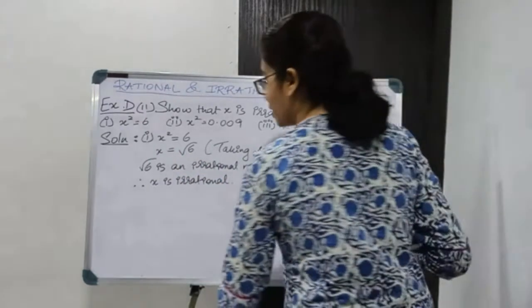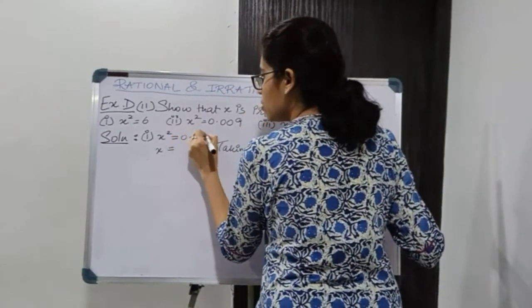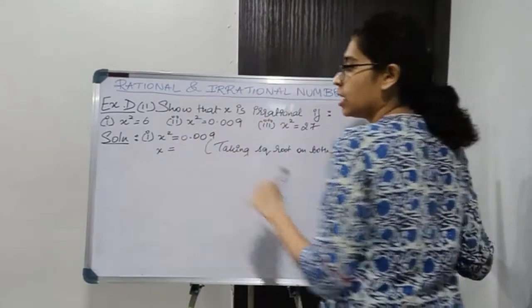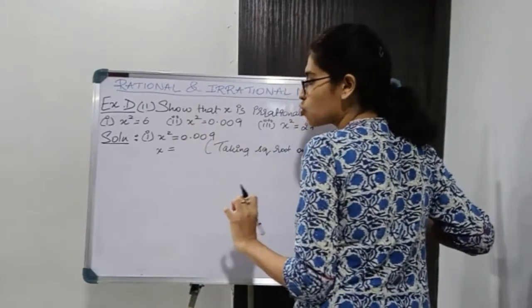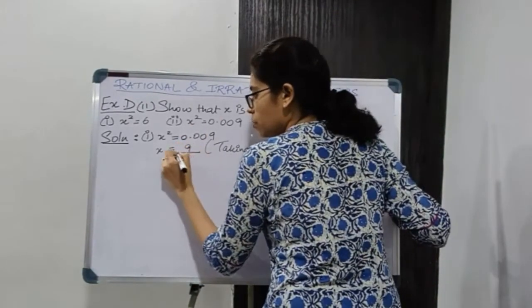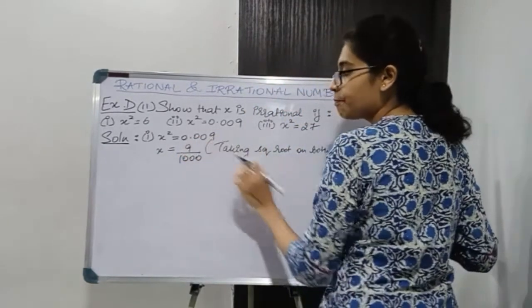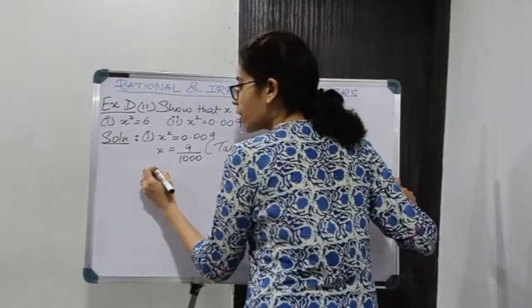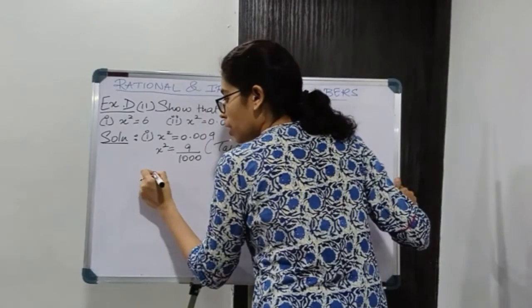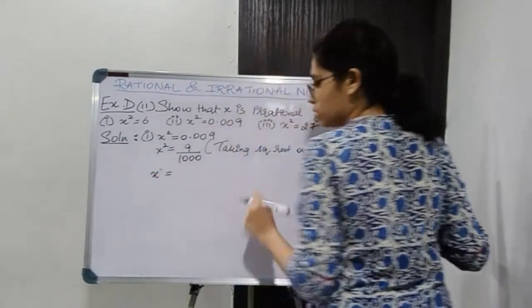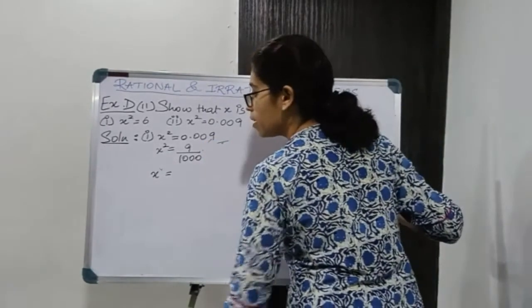Moving on to the second part of the question: x square is equal to 0.009. Now this is in the decimal form, so we will write it in the fraction form. So it becomes 9 upon 1000 — there are three numbers after the decimal point, so denominator is 1000. Now this is x square and we need to find x, so we will take square root.